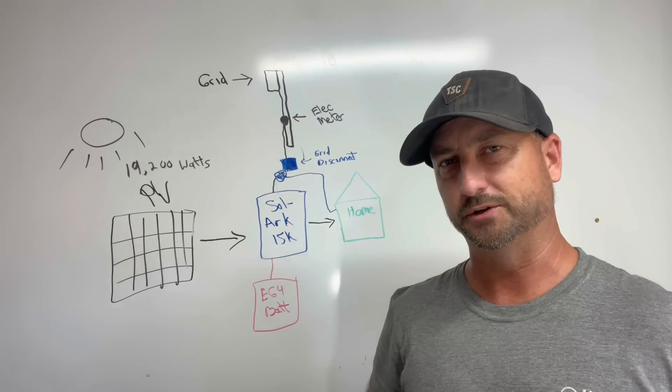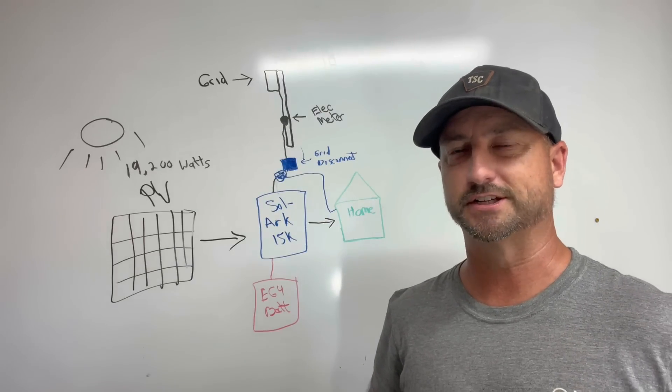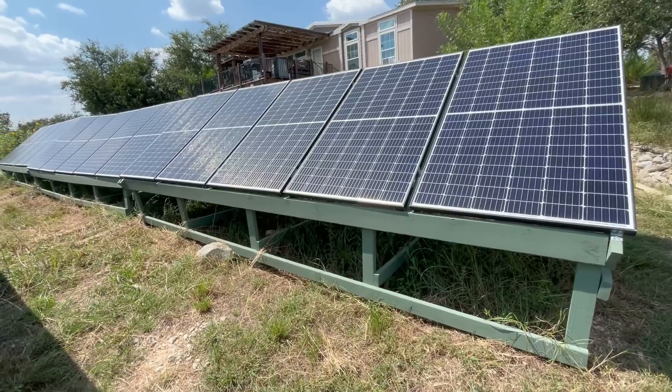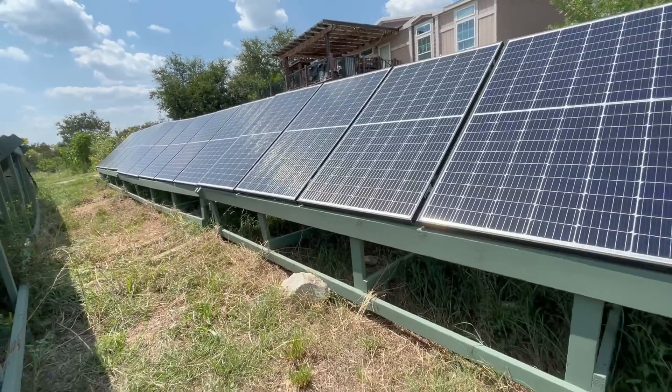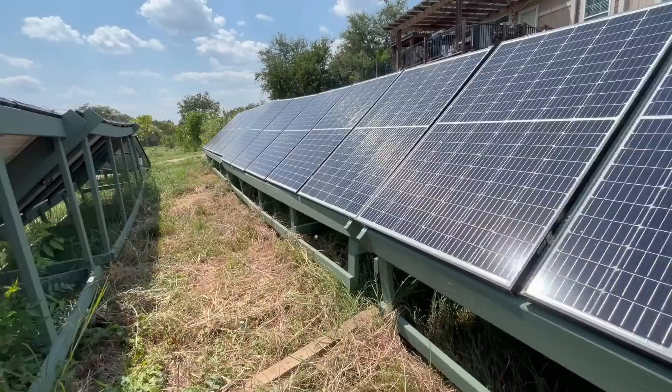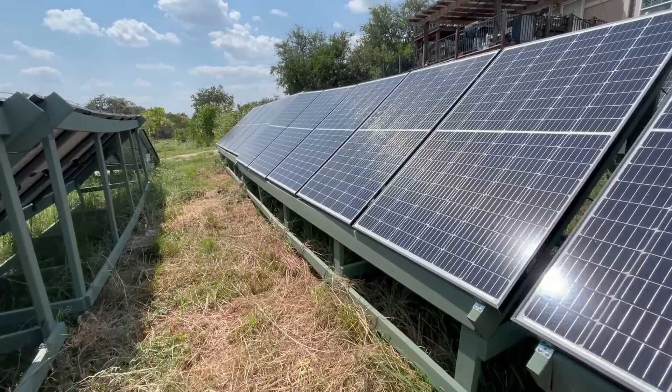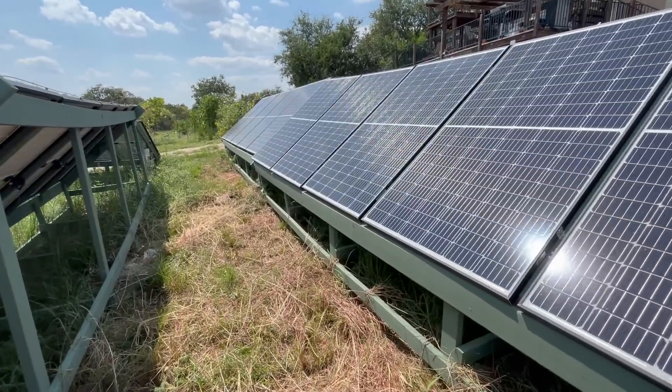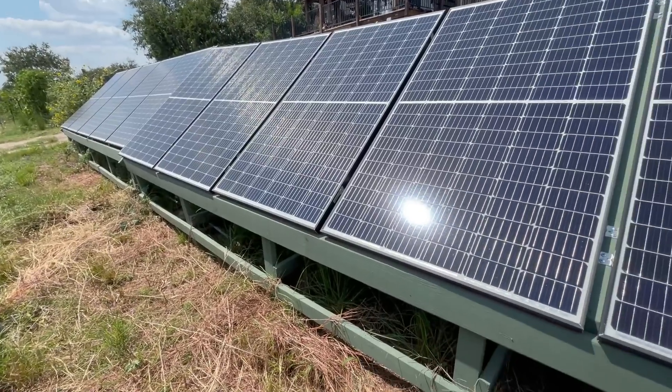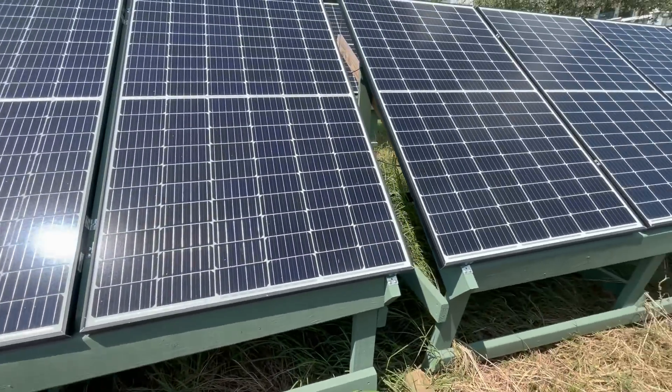Number two, the second thing I would change is I built my solar panel racks out of pressure treated wood and then I painted it. I built all of my racks, which I have a lot of racks. I have 12 racks that hold five panels each. And those racks literally took me I think like three months to build. It was hard work.